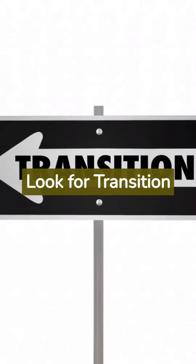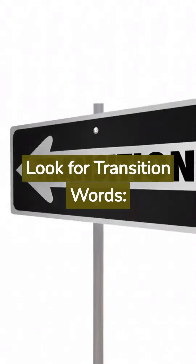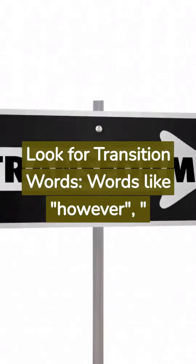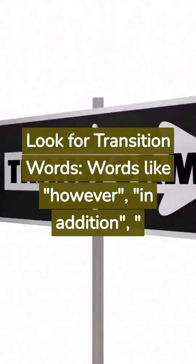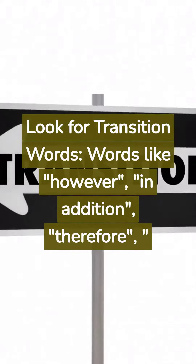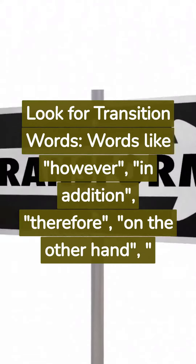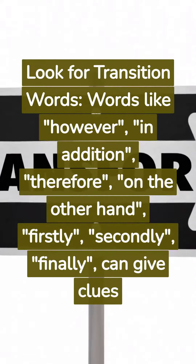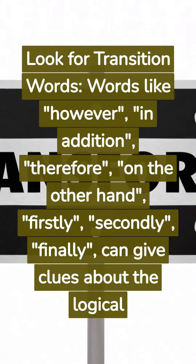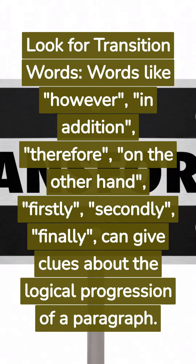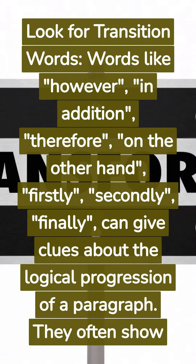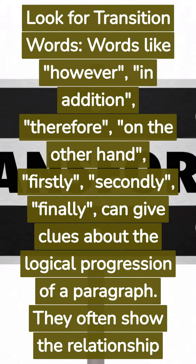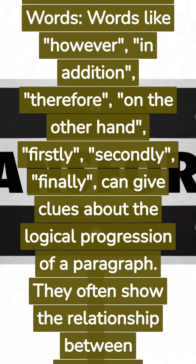Look for transition words. Words like 'however', 'in addition', 'therefore', 'on the other hand', 'firstly', 'secondly', and 'finally' can give clues about the logical progression of a paragraph. They often show the relationship between sentences.